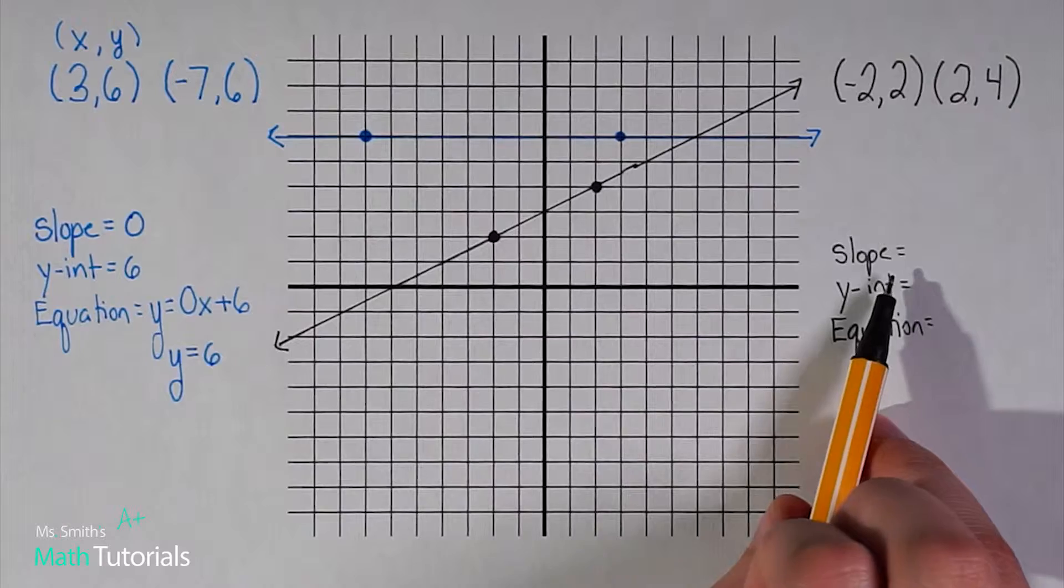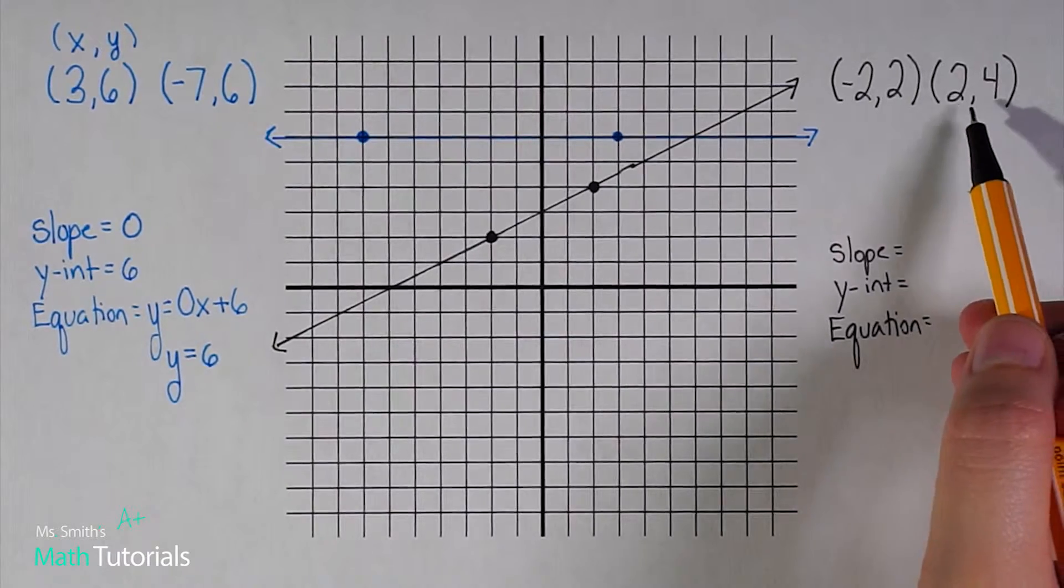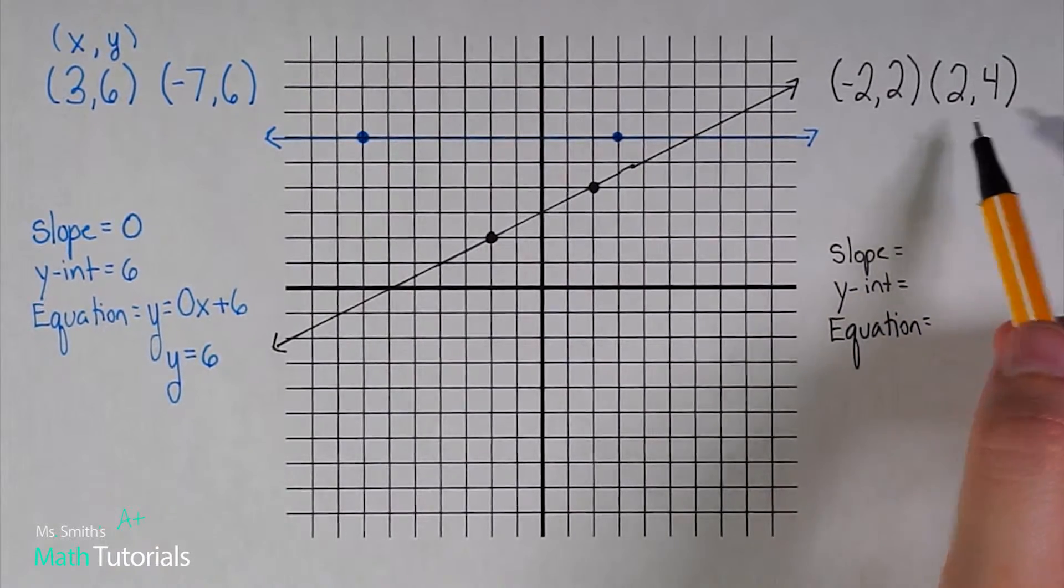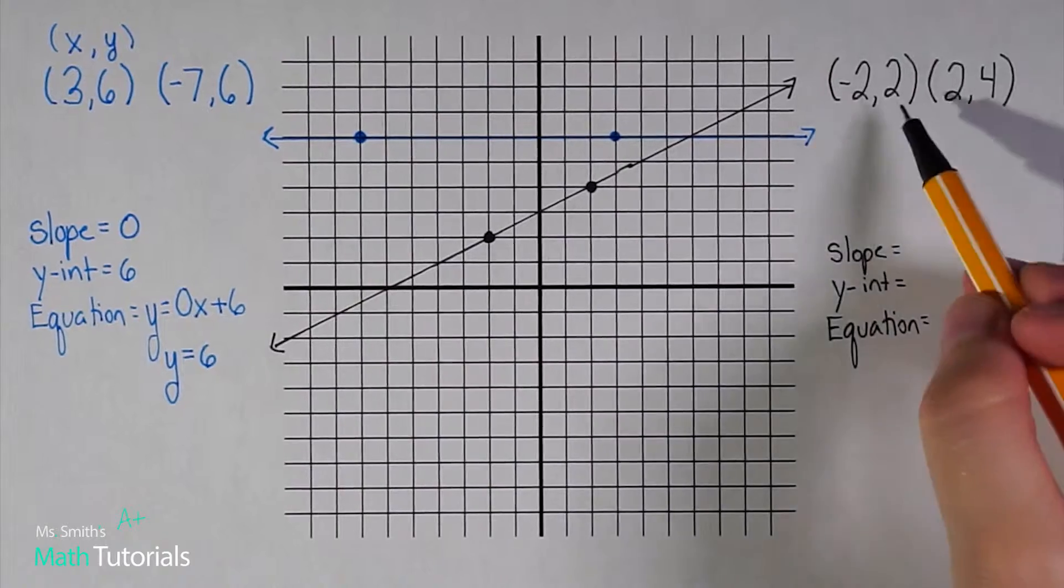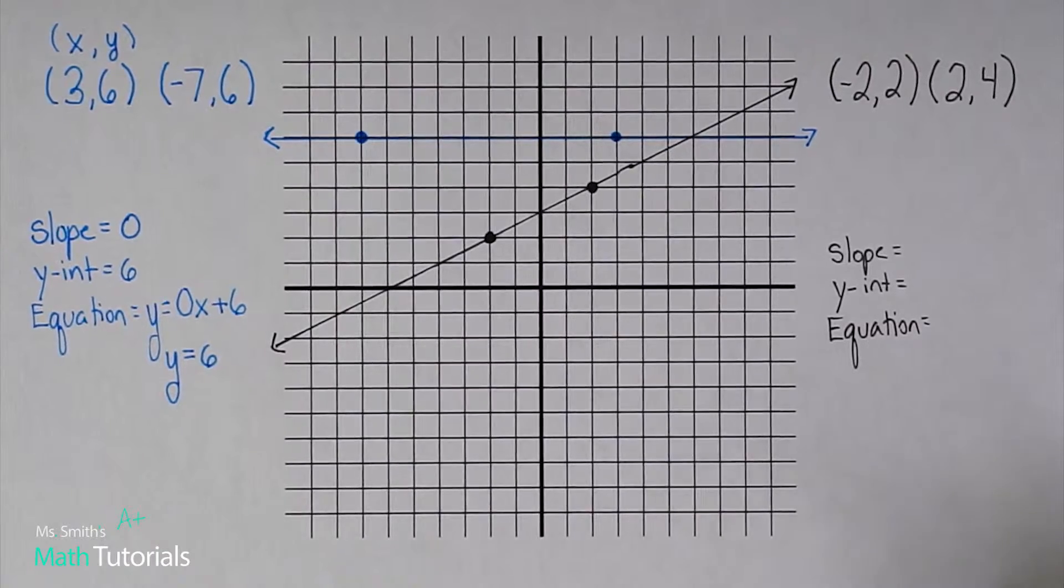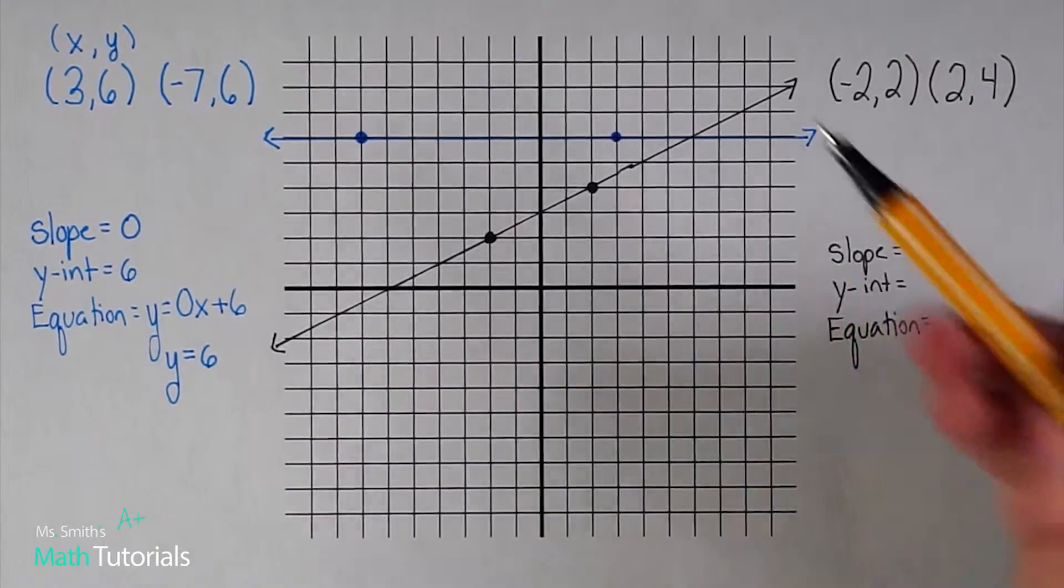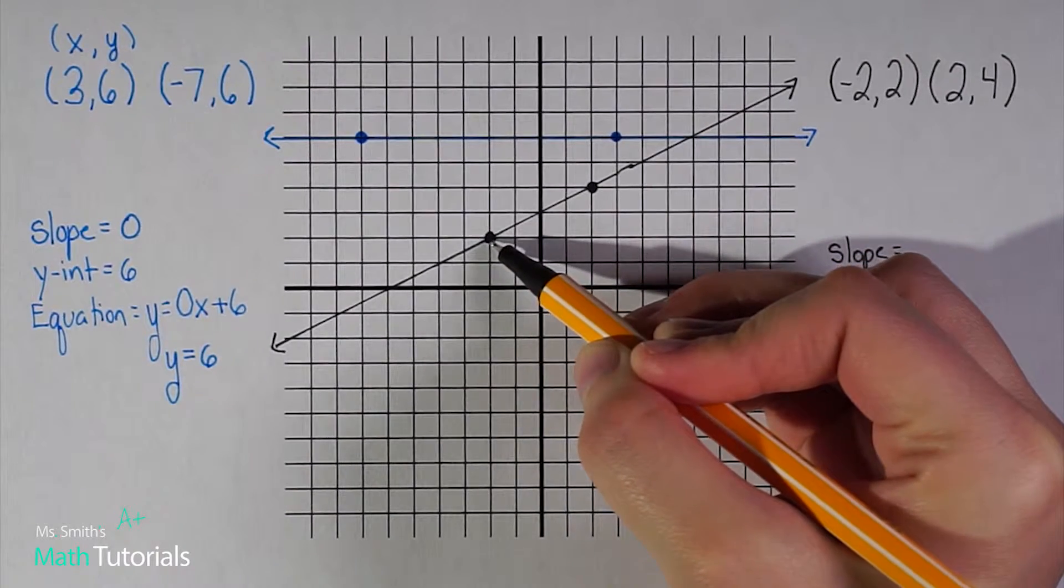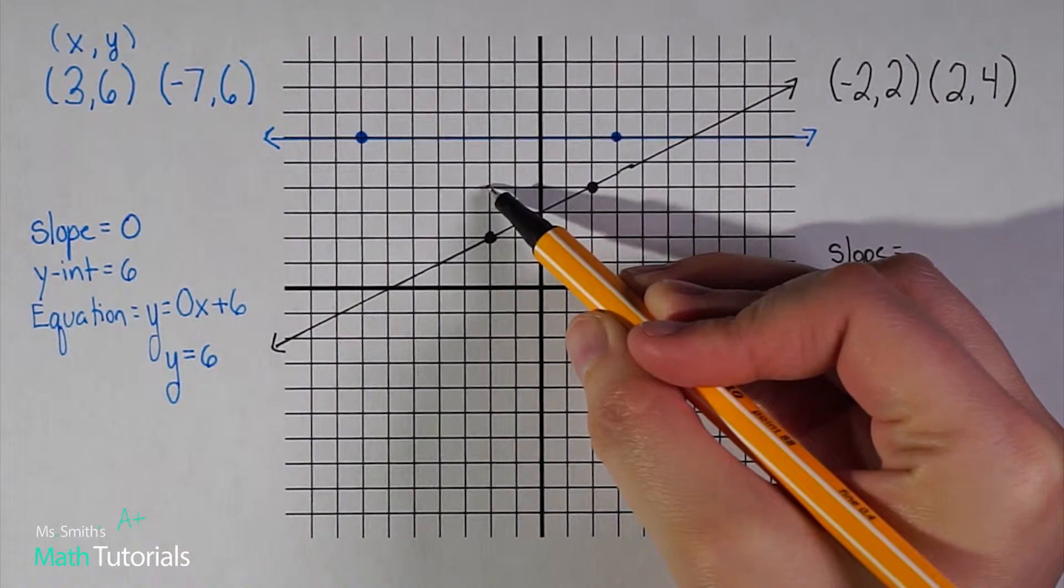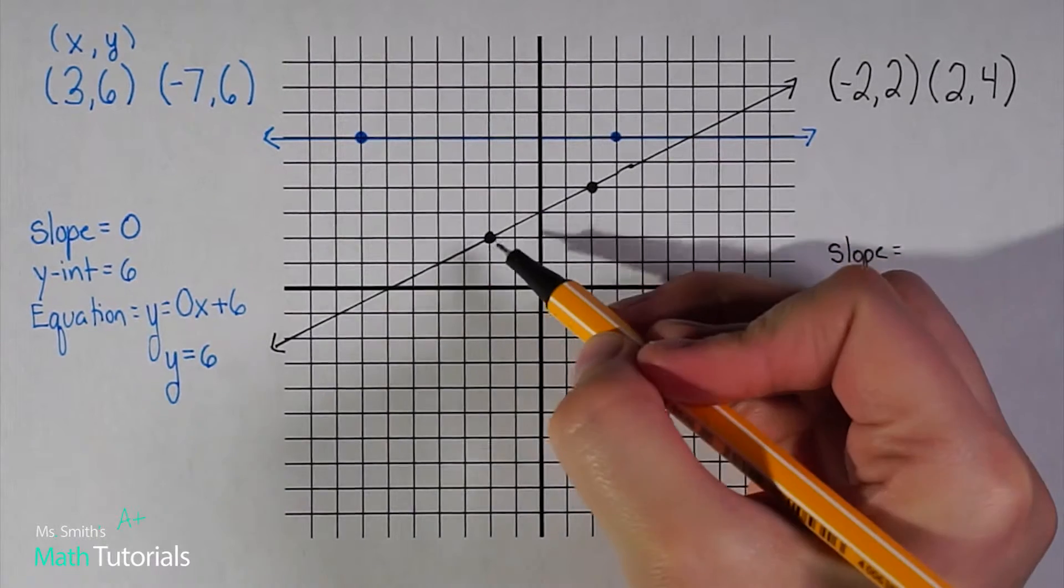So I want to know what is my slope? There are a couple of ways we could do this. I have two points, so I could do it mathematically, change in y over change in x. But let's try to find it just by counting, just by looking at the graph. I want to pick one point and see how far do I move up and how far do I move over to get to my next point. Rise over run.